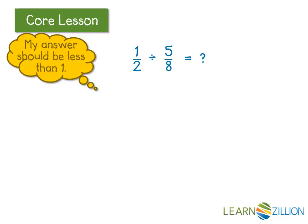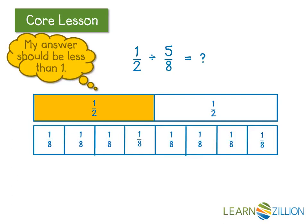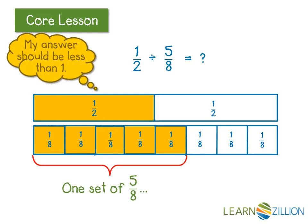The question that I want to answer is, how many 5 eighths are there in 1 half? First, I will show my dividend, 1 half, by shading half of a rectangle. Then I will make another whole rectangle that's been divided into eighths, and I will shade 5 of these eighths to represent the divisor. This portion right here shows one set of 5 eighths. I can see that it will not fit into 1 half. Only part of it, or a fraction of it, fits.